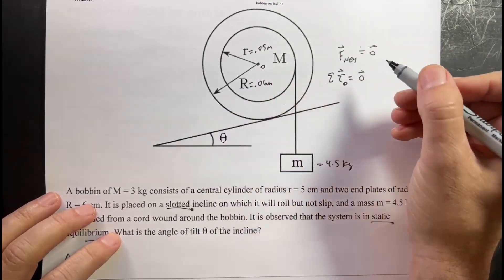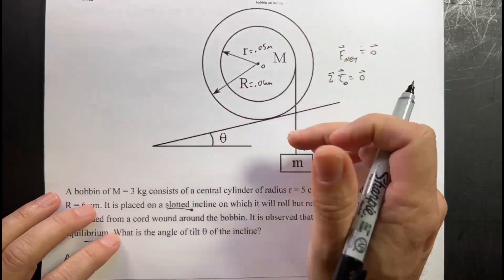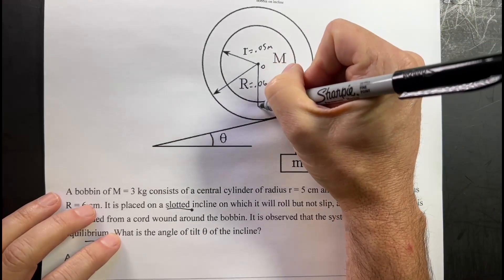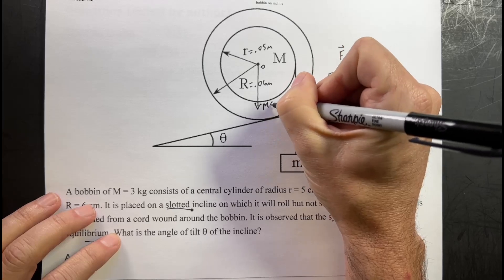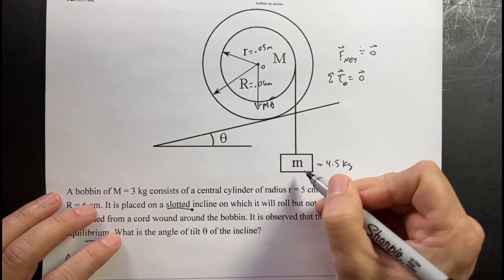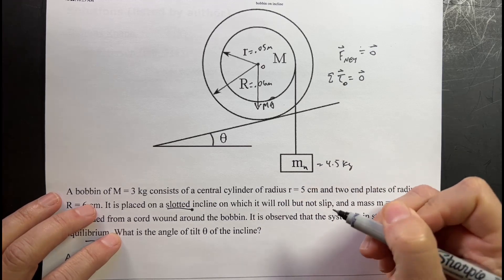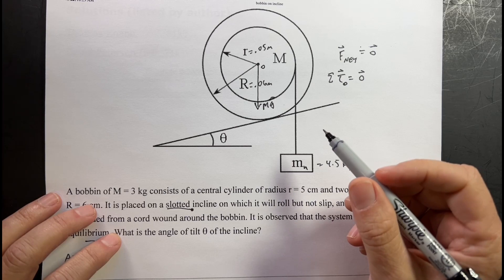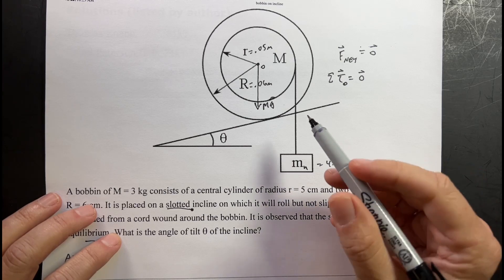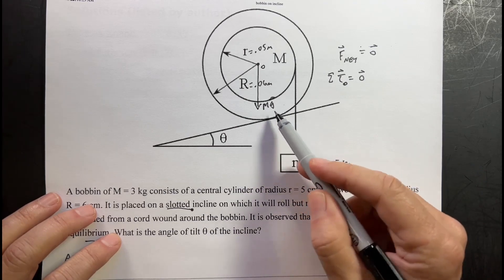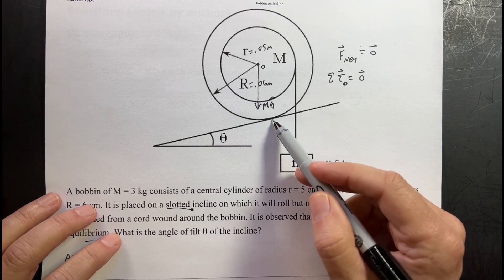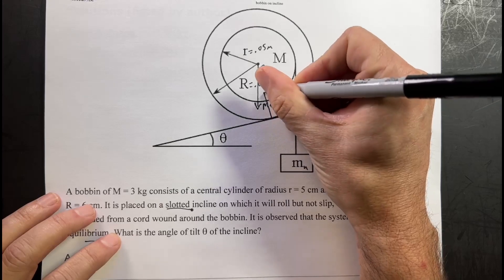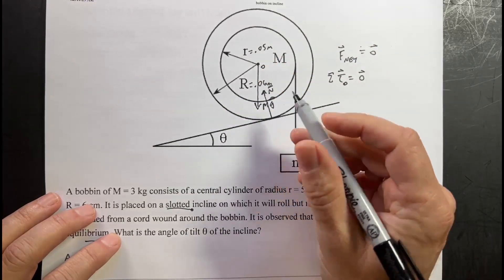So the number one thing is what forces are acting on this bobbin. Number one is the gravitational force. So that acts at the center of mass. I'll draw it right there. Mg. Actually, that's capital M. Let's call this Mg. And then what are the forces acting on it? There are contact forces - friction and the normal force. So there are two forces acting on this due to this interaction right here. First of all, there's a normal force, which is perpendicular to the surface. That's N. And then there's a friction force.